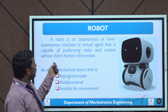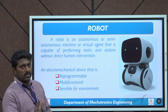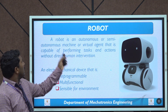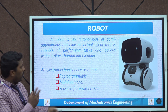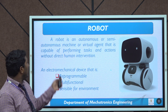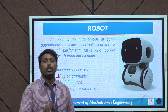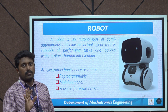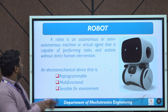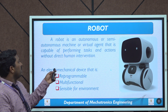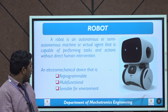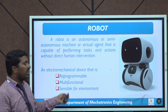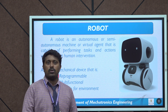What is a robot? A robot is an autonomous or semi-autonomous machine or a virtual agent that is capable of performing tasks and actions without any human intervention. Otherwise, it is an electromechanical device that is reprogrammable, multifunctional, and sensible to the environment — that is another definition for a robot.